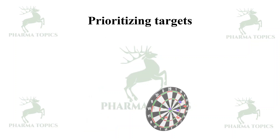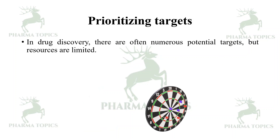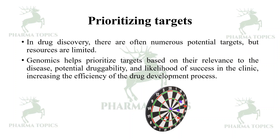Prioritizing targets: in drug discovery there are often numerous potential targets but resources are limited. Genomics helps to prioritize targets based on their relevance to the disease, potential drugability, and likelihood of success in the clinic, increasing the efficiency of the drug development process.